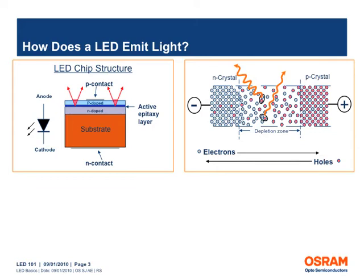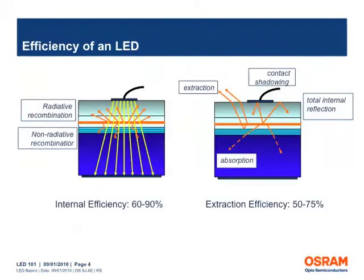When a forward voltage is applied to the PN junction, electrons move from the N side towards the P side and holes move from the P side towards the N side and combine in the depletion zone between these regions. Some of these recombinations are radiative, in which energy is released in the form of light. The non-radiative recombinations occurring in the PN junction result in heat being generated in the semiconductor material. The ratio of radiative to non-radiative recombinations determines the internal efficiency of the LED.